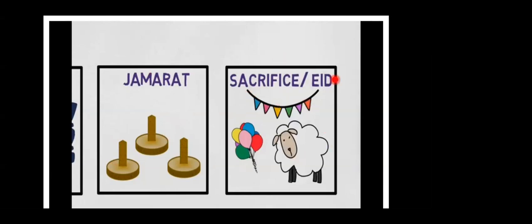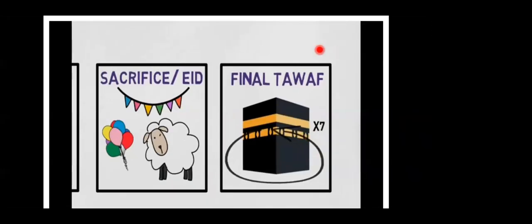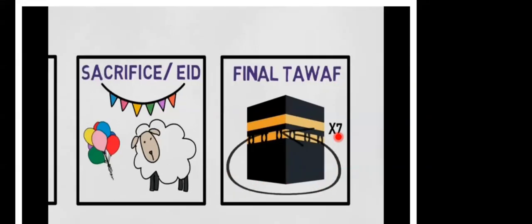The next step is sacrifice — the pilgrims sacrifice an animal to please Allah and to honor the sacrifice of Ibrahim alayhis salam, who was ready to sacrifice his son Ismail for the sake of Allah. Finally comes the final Tawaf, where the pilgrims return to Makkah and circle the Kaaba seven times. This marks the completion of Hajj.